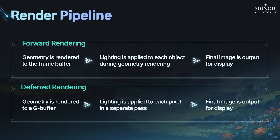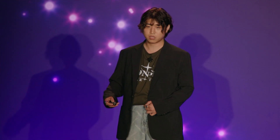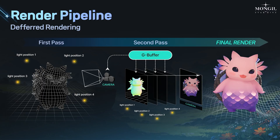Most of you already know the difference between forward and deferred rendering pipelines, but I'll briefly introduce them for better context. Forward rendering is object-based — it renders each object separately, writing directly to the frame buffer and composing them one by one. Deferred rendering is more of a collective method: it gathers all necessary information into a G-buffer and renders everything at once in a later pass. This project uses a deferred rendering architecture, and addressing its disadvantages is one of the key tasks to overcome.